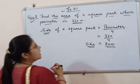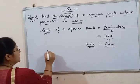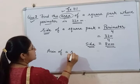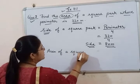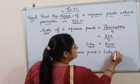Now we can easily find the area of the square. The formula is side multiplied by side.